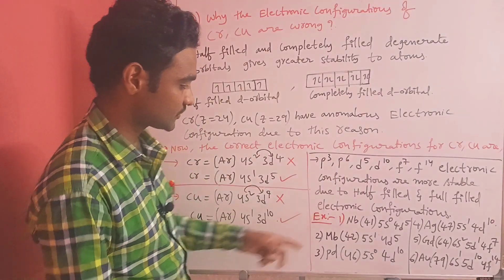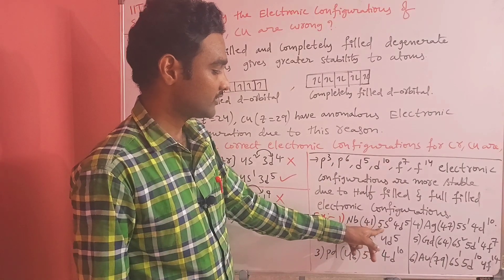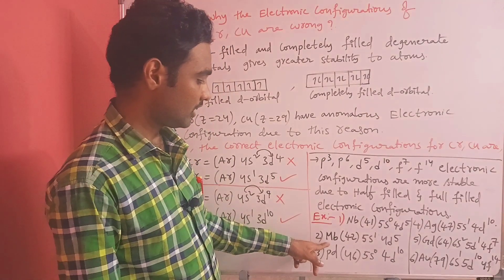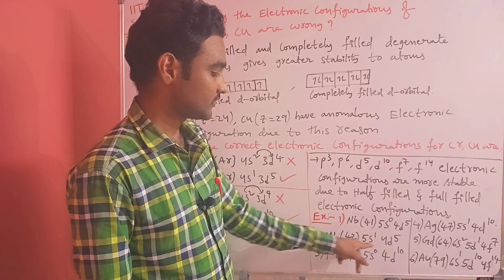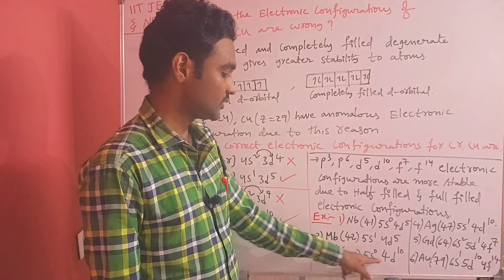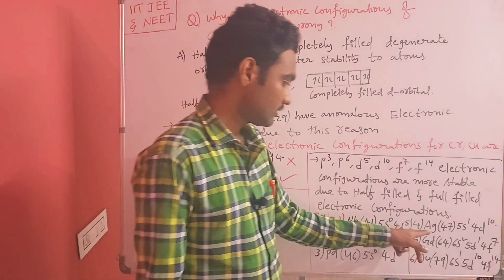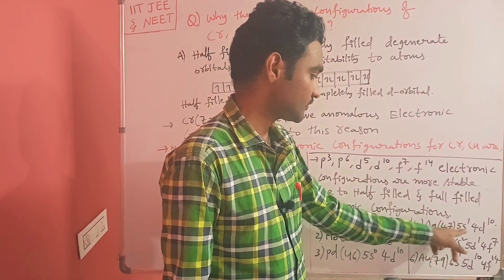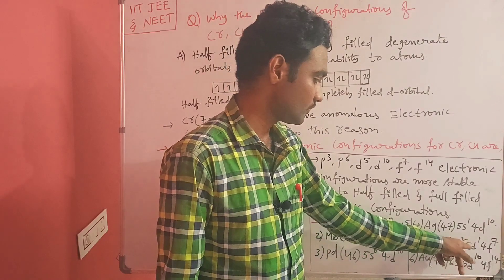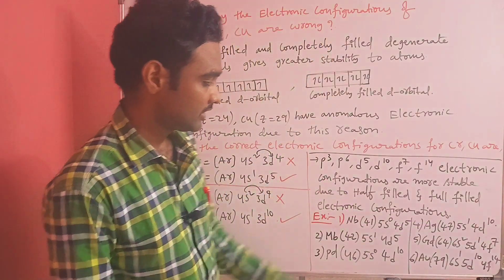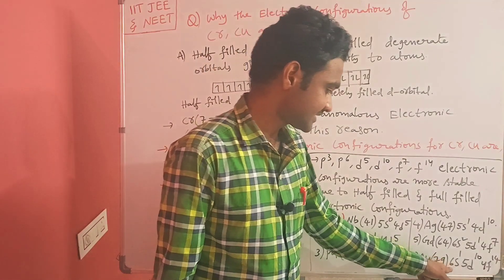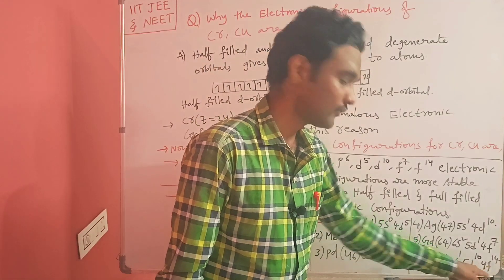Some additional examples of anomalous configurations: Niobium (41): 5s0 4d5. Molybdenum (42): 5s1 4d5. Palladium (46): 5s0 4d10. Silver (47): 5s1 4d10. Gadolinium (64): 6s2 5d1 4f7. Gold (79): 6s1 5d10 4f14.